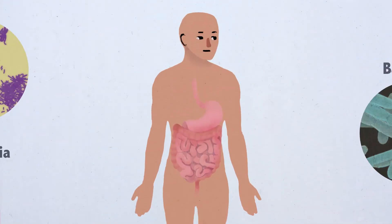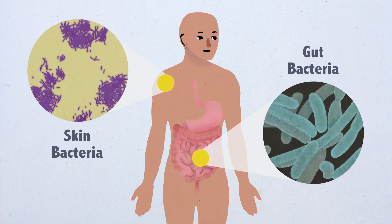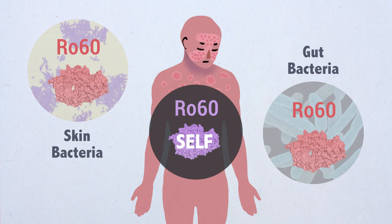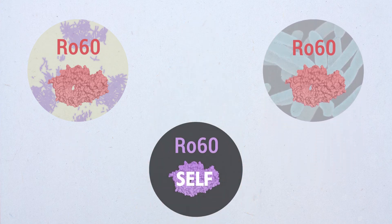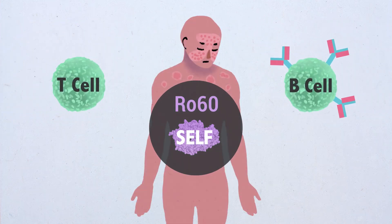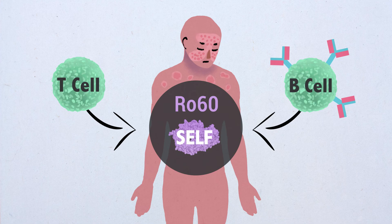Taken together, we discovered that people harbour skin and gut commensal bacteria that carry proteins very similar to a major self-antigen in lupus patients. We linked the normal reaction to the commensal protein with autoimmune responses to self. This may explain how predisposed subjects develop particular autoimmune manifestations in systemic rheumatic diseases such as lupus.